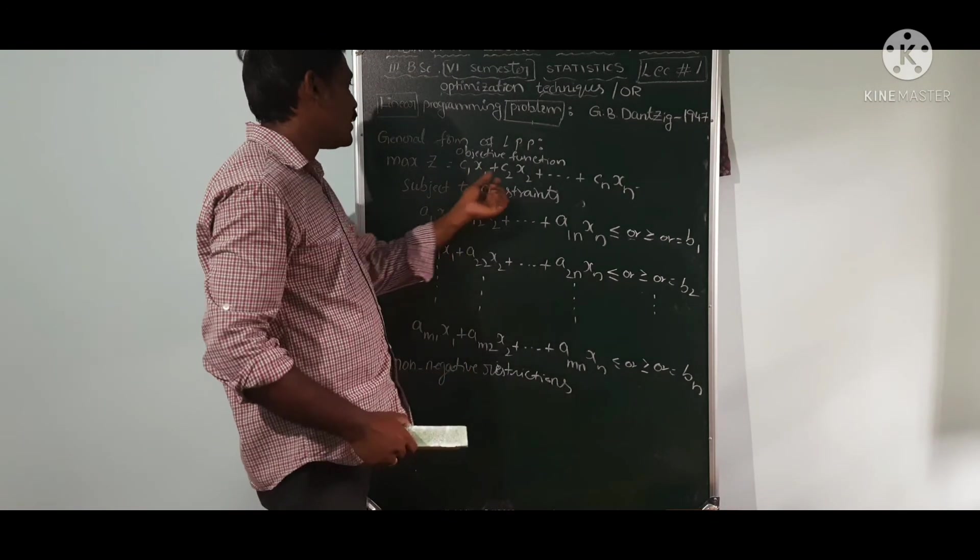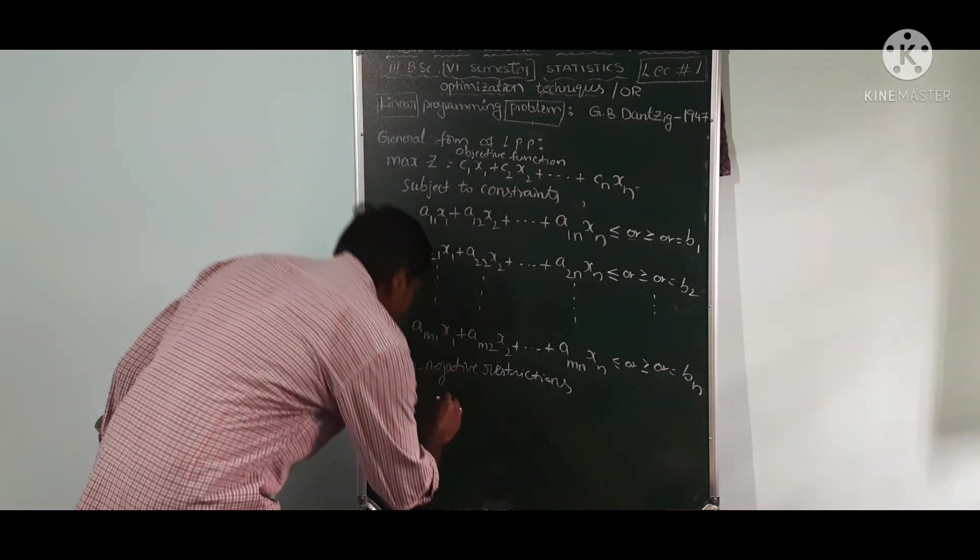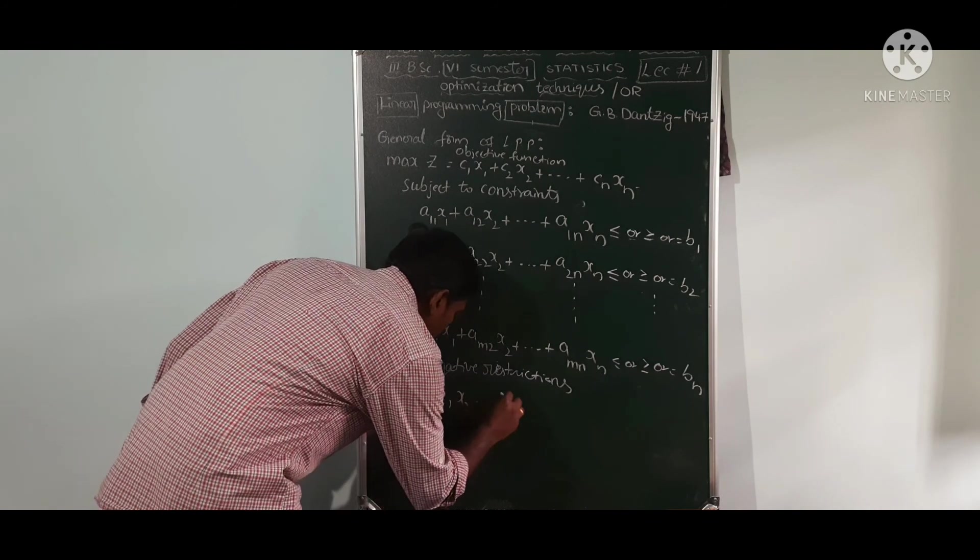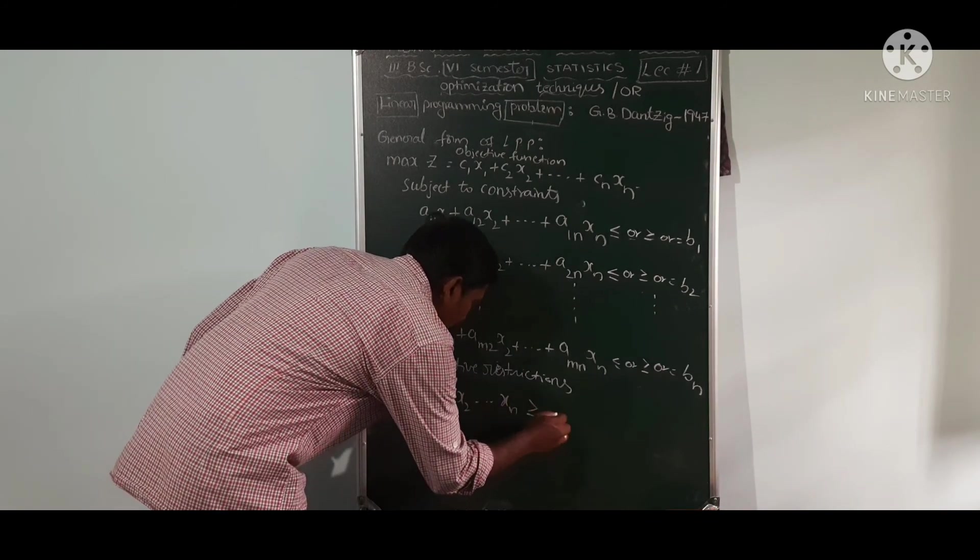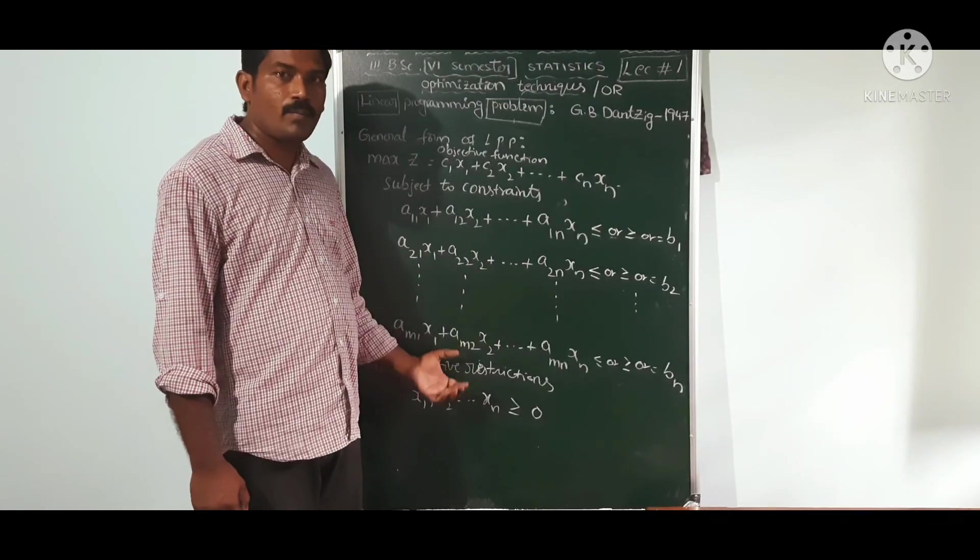Non-negative restrictions. X1, X2, Xn and so on. It doesn't have been non-negative restrictions. The only point is the positive value of X1, X2 and so on. Xn greater than or equal to 0. This is general form of LPP.